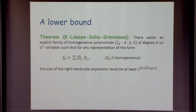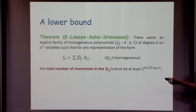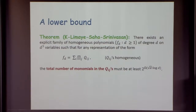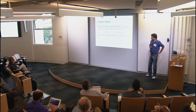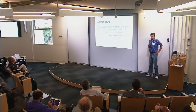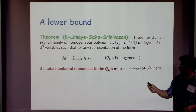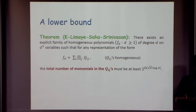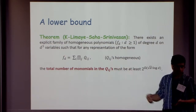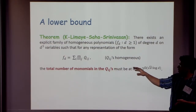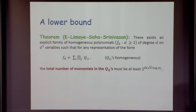You'll see in a moment why we worry about the log factors. There will be a constant hidden here, about 0.5. The size of this expression on the right-hand side is measured by taking all the q_ij's, looking at how many monomials they have, and adding this up.